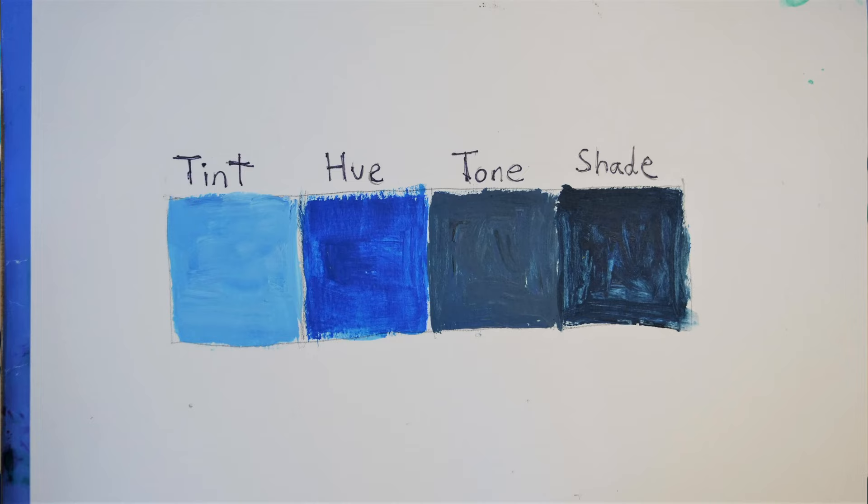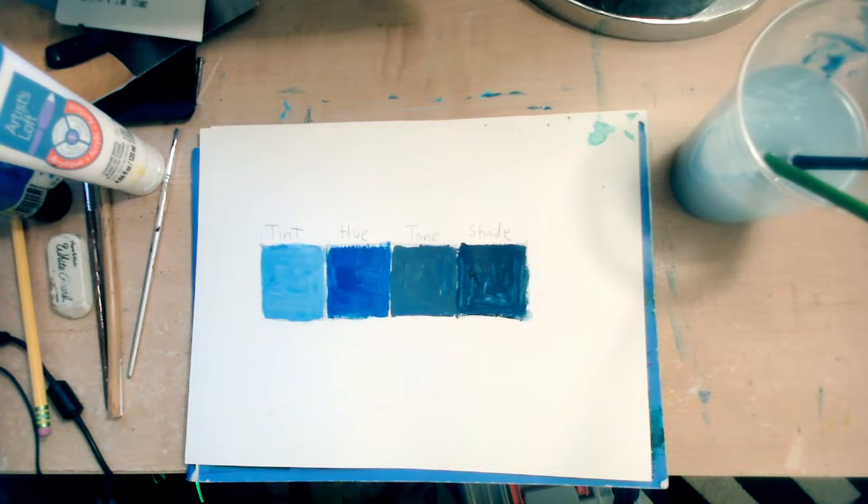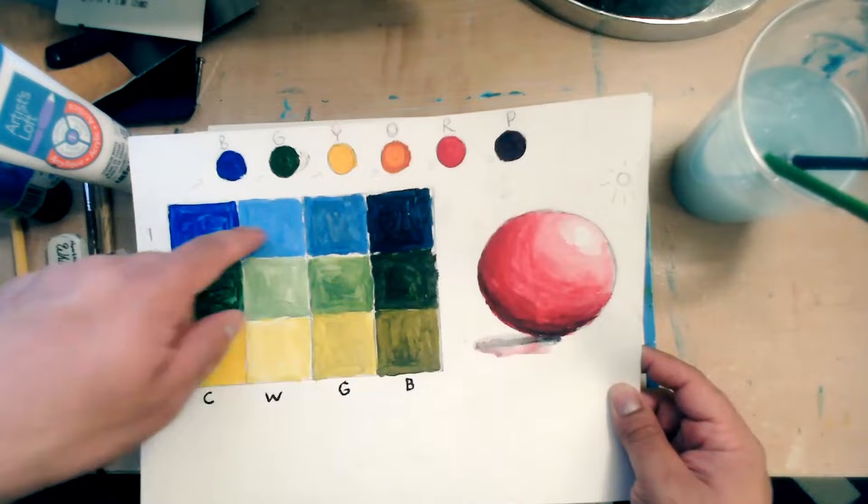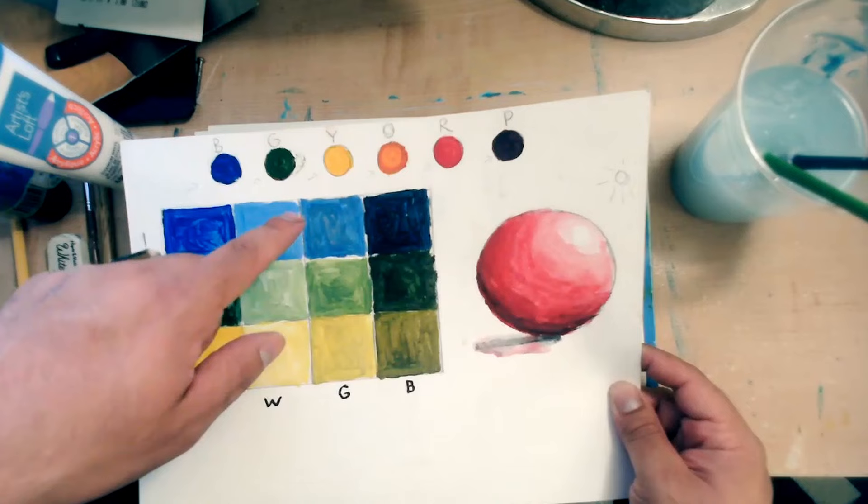Okay, so now that it's complete, that's all you have to do for the exercise. Just pick one color. I'm going to show you another example that I did a while back. I have three rows. And as you can see, we have the hue, tint, tone, shade.